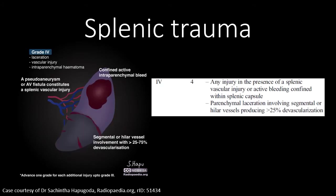A grade 4 splenic injury is a severe injury that often requires some form of intervention. Any vascular injury or active bleeding contained within the spleen is considered grade 4 — that could be a pseudoaneurysm, a focus of active extravasation, or an arteriovenous fistula, which is very difficult to differentiate from a pseudoaneurysm on CT. You could also have a large laceration causing devascularization of a portion of the spleen, or central hilar vessel or segmental vessel involvement. These grade 4 injuries often require intervention, preferably angiography, but if a patient is not hemodynamically stable after aggressive resuscitation, operative management may be required.